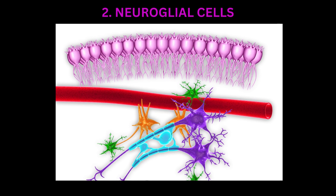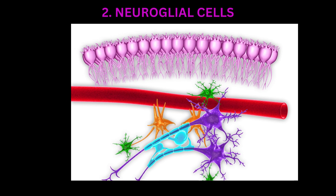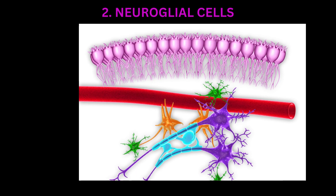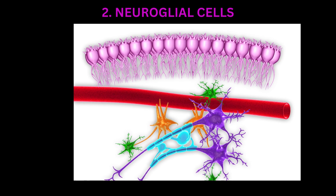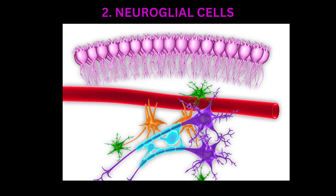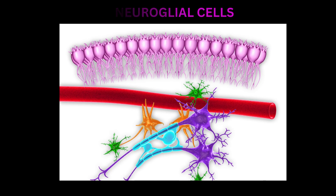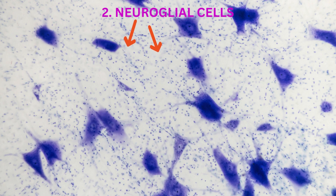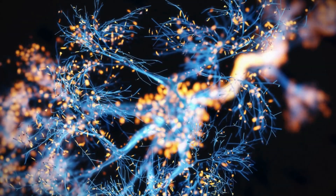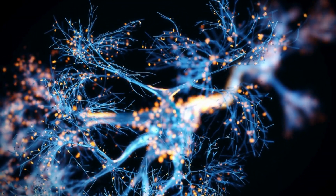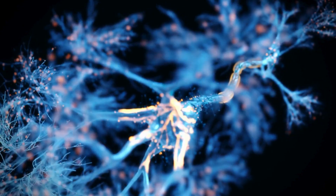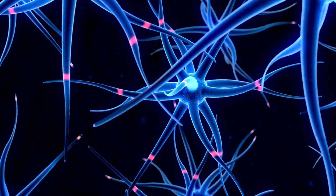Neuroglia, or glial cells, are support cells that provide structural support and maintain the environment around neurons. They do not transmit electrical impulses, but play essential roles in insulation, nutrient exchange, and defense. Understanding the structure and function of nervous tissue is essential for comprehending how information is processed and transmitted within the nervous system.